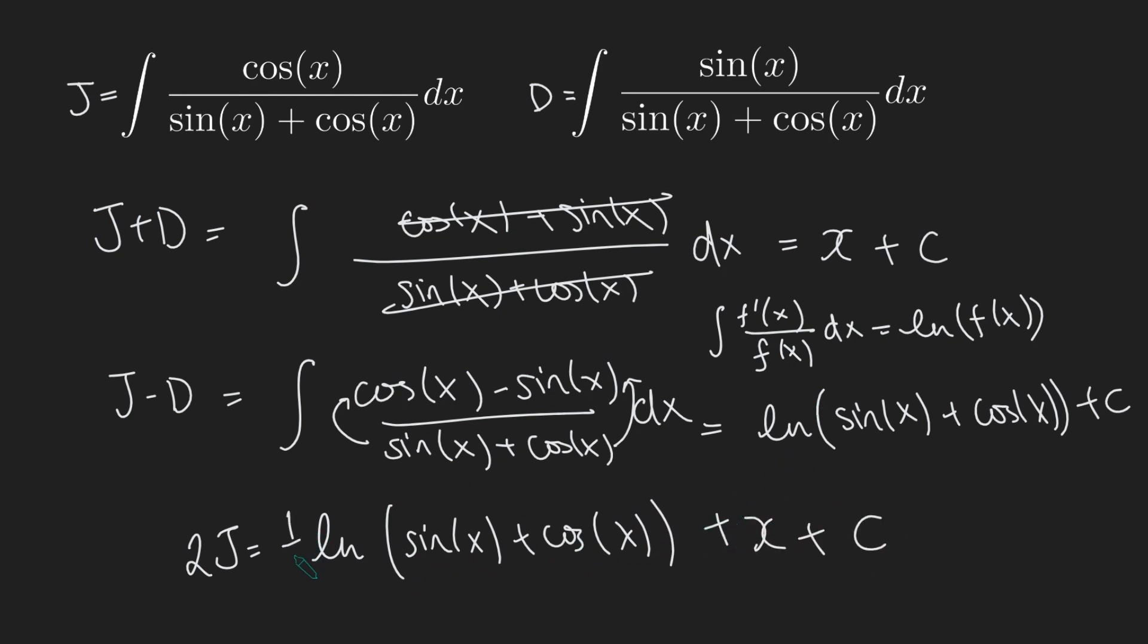And dividing both sides by 2, I could put a half there, a half there. And again, the constant divided by 2 still remains a constant. And so I get that this integral of cosx divided by sinx plus cosx dx equals a half ln sinx plus cosx plus a half x plus C. So pretty nice integral here where we haven't really directly integrated it.